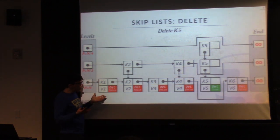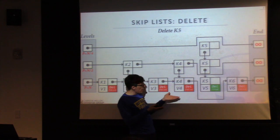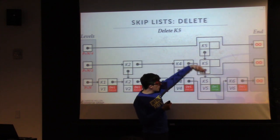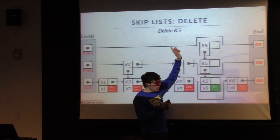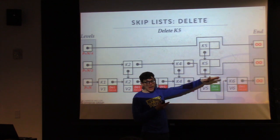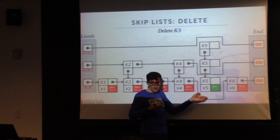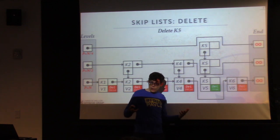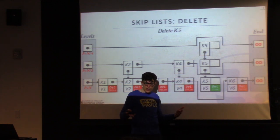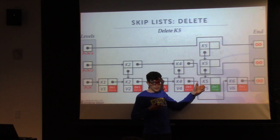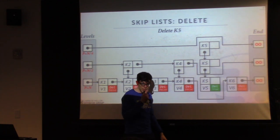At this point in the diagram, we still have key 5 in our tower but all the other pointers now go around it, so no one can traverse and find us. But since this is a latch-free data structure, a thread could still be sitting there for whatever reason — we need to make sure it's gone before we can reclaim the memory.